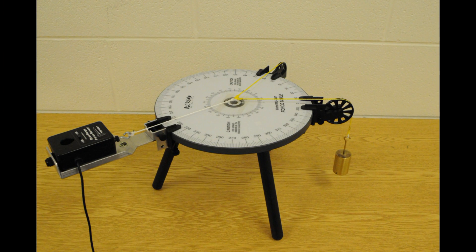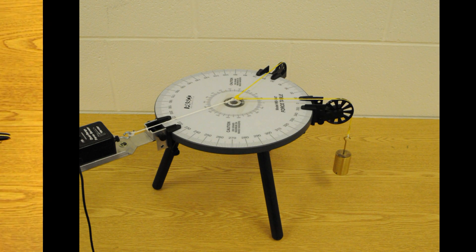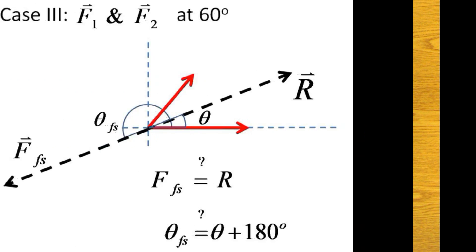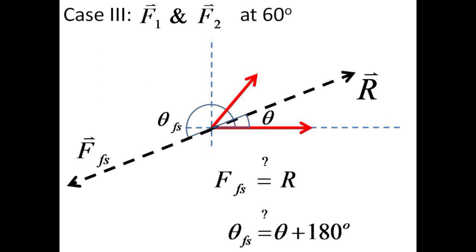The setup is similar to what was done before. Record the new magnitude and direction for the force sensor string tension. Compare the magnitude and direction of the force sensor string tension with the predictions for R.